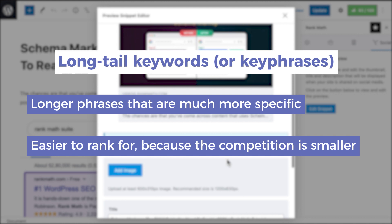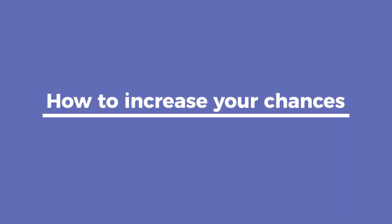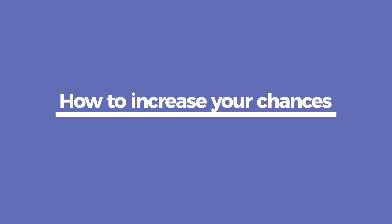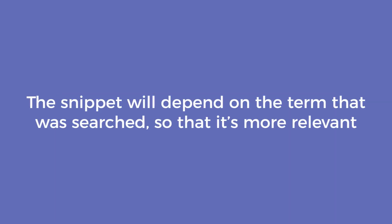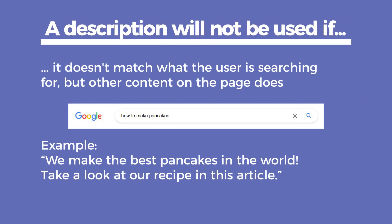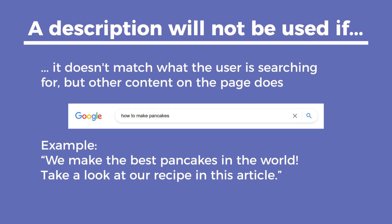Long-tail keywords are longer phrases that are much more specific, which usually makes them easier to rank for because the competition is smaller. If you decide to carry on making meta descriptions, let's talk about how to increase the chances of Google showing them. Like we mentioned earlier in this video, the snippet will depend on the term that was searched so that it's more relevant. So if the description doesn't match what the user is searching for, but other content on the page does, it will be used instead.